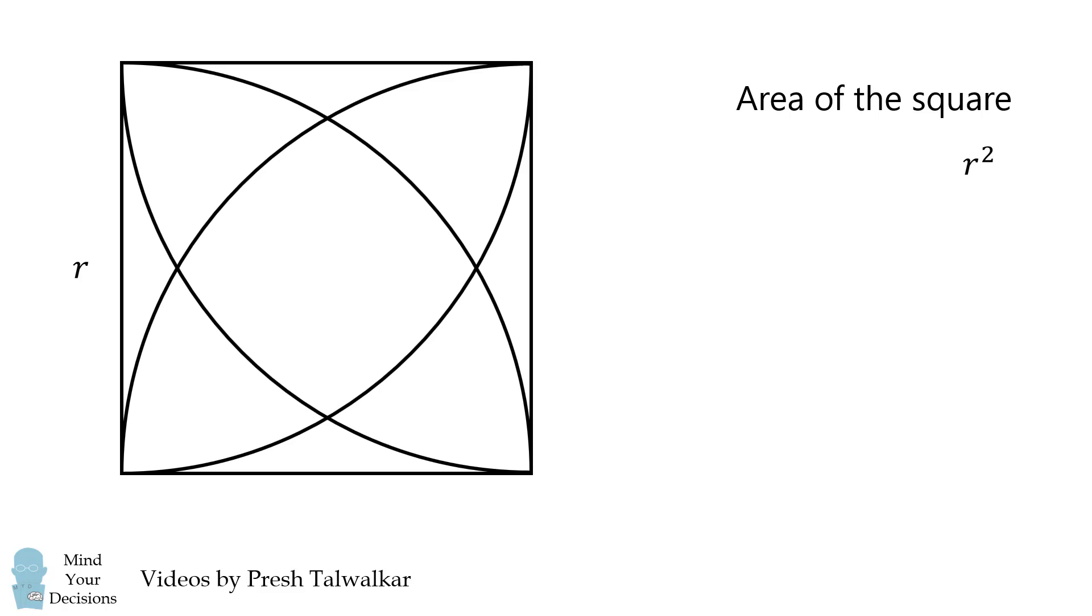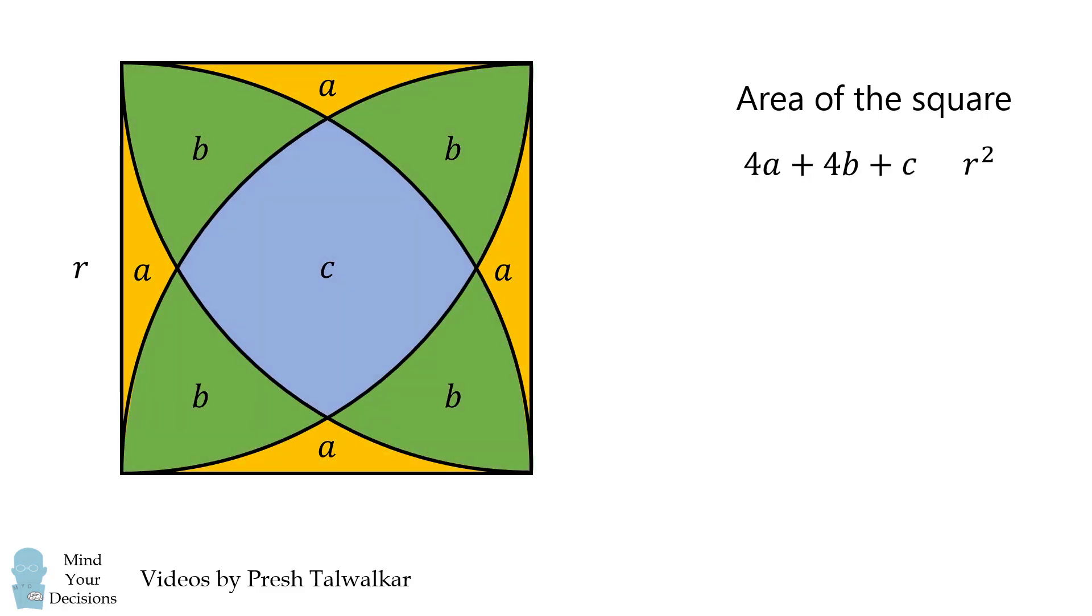Now consider the quarter circles. Label this area as a. That means these areas will also be equal to a. Suppose this area is b. That means these areas will also be equal to b. Finally label this area as c. Notice that 4a plus 4b plus c is also equal to the area of the square, which is equal to r squared.